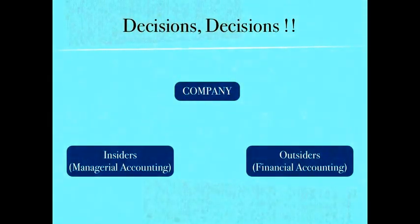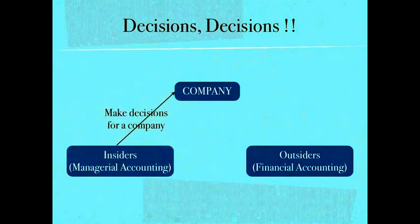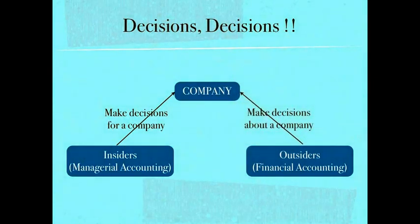To give a diagram of what we've just talked about: insiders — users of managerial accounting — make decisions for a company, determining where the company is going to go from here. Outsiders that use financial accounting information will make decisions about a company — so what should I do in regards to this particular company?